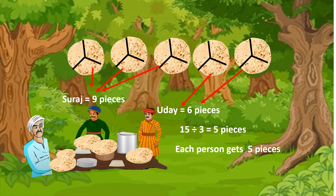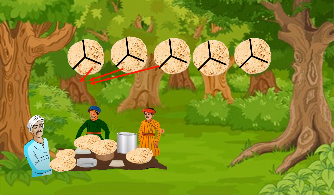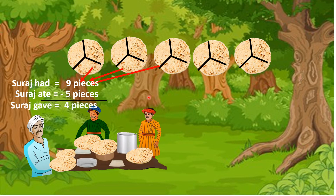Now if you observe mathematically: Suraj had nine pieces of rotis and Suraj ate five pieces. That means nine minus five equals four pieces. So Suraj contributed four pieces of rotis to Sham — Suraj gave four pieces to Sham.